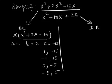Of these combinations, the one that satisfies the second part of the condition, that is, adding up to b equal to 2, would be negative 3 and 5.